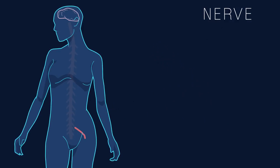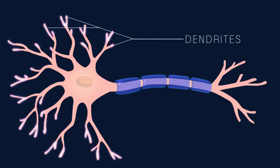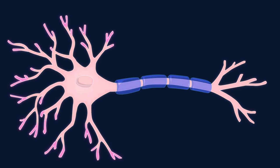Nerves can be very long as they often need to transmit information over long distances. As we just saw, the dendrites are the part of the neuron that receives incoming signals. Based on the strength of this incoming stimulation, the neuron must decide whether to pass that signal along or not. If the stimulation is strong enough, the signal is transmitted along the entire length of the axon in a phenomenon called an action potential. When this happens, we say the neuron fires.